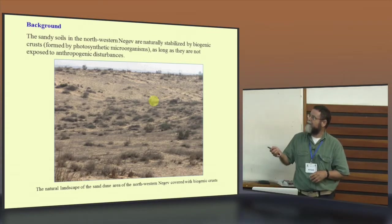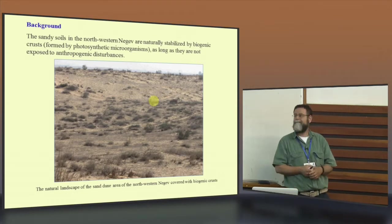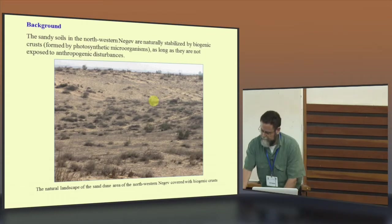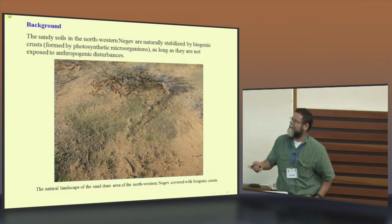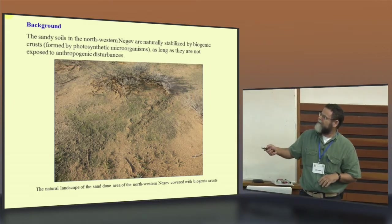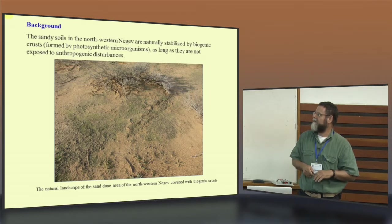What is biogenic crust? It's a photosynthetic organism, mainly cyanobacteria, filamentous one. When it's close up, you can see the crust. It's all green, especially when it's wet, and it stabilizes the soil surface.